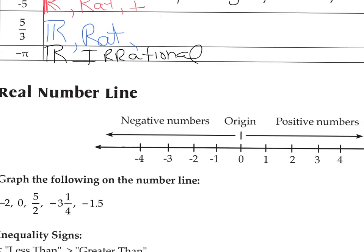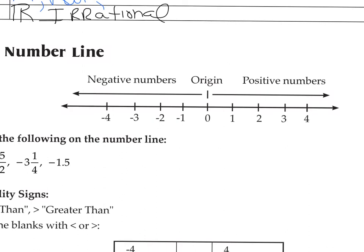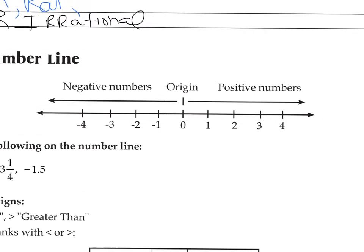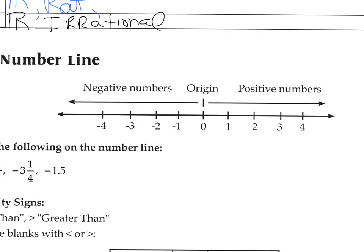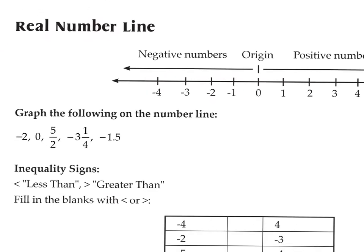Let's look at the number line. We have the origin — a tick mark right at zero. The positive numbers go on infinitely in the right direction, and the negative numbers go on infinitely in the left direction. These are integers; integers are usually what we label the tick marks on our number line as.